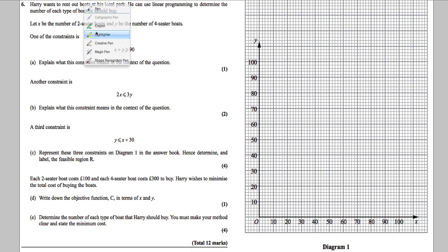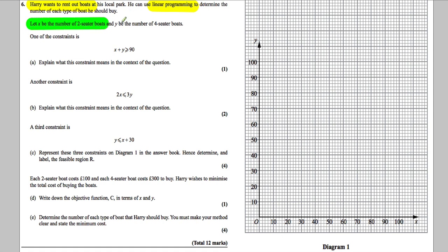Question 6. What are we told? Harry wants to rent out boats at his local park. He can use linear programming to determine the number of each type of boat he should buy. Let X be the number of 2-seater boats and let Y be the number of 4-seater boats. One of the constraints is that X plus Y must be bigger than or equal to 90. Explain what this constraint means.